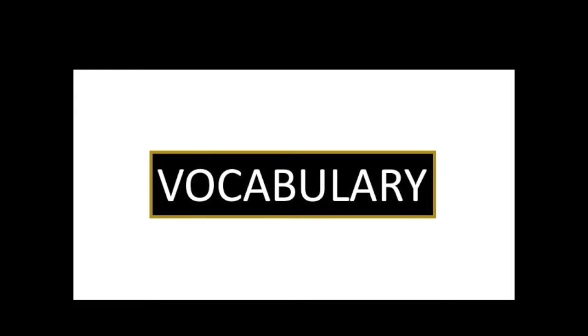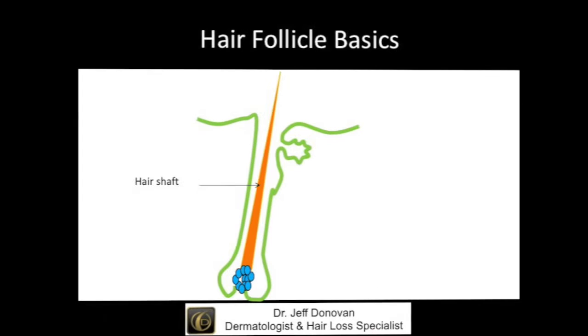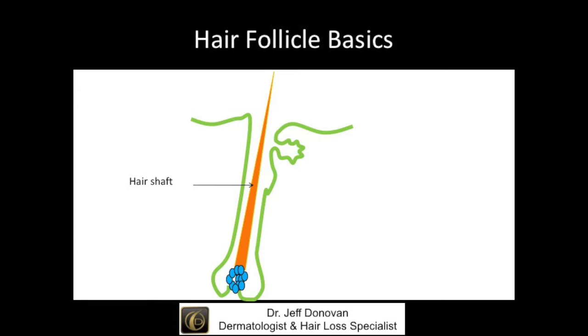Before we take a closer look at what might be causing these scarring alopecias, I'd like to introduce some key vocabulary — terms you'll need as we go about understanding what causes these conditions. The first term is the hair shaft. In this diagram the hair shaft is shown in orange. If you reach up and touch your own hair, you're feeling the hair shaft. There are about 100,000 of these structures on your scalp.